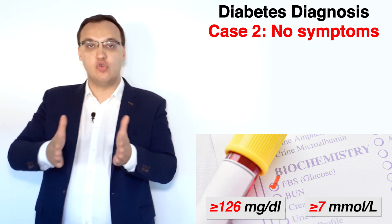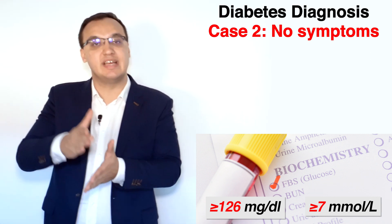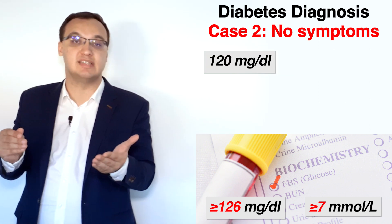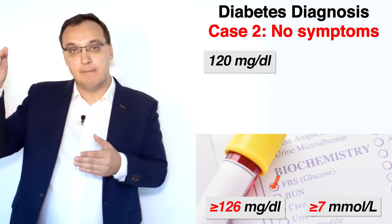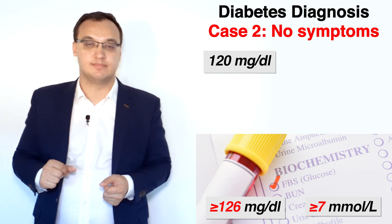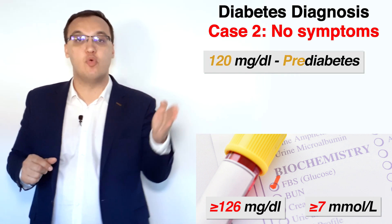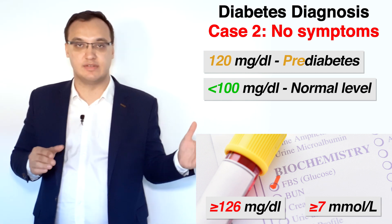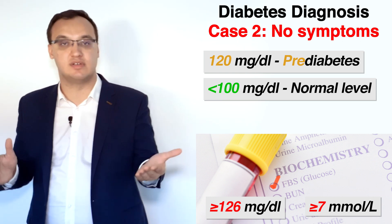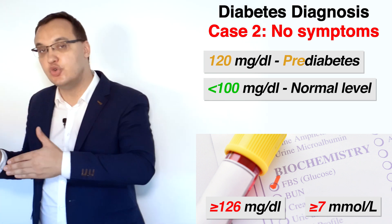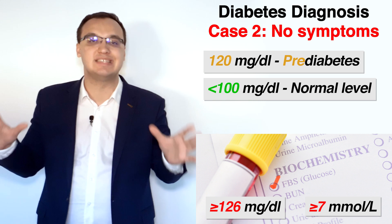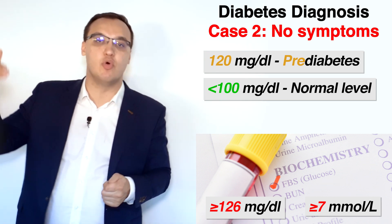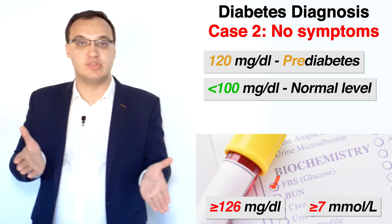All values at or above the thresholds I mentioned indicate diabetes mellitus. Values below that — for example, a fasting plasma glucose of 120 mg/dL, which is high but not above 126 — we call pre-diabetes. The normal level of fasting plasma glucose is below 100 mg/dL, which equals below 5.6 mmol/L. So values between normal and diabetic range fall into pre-diabetes.